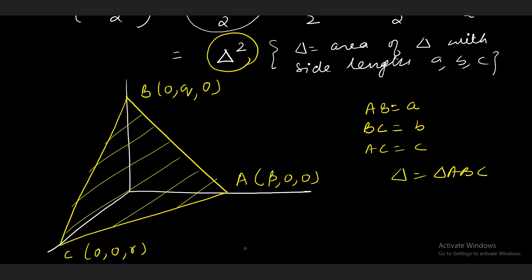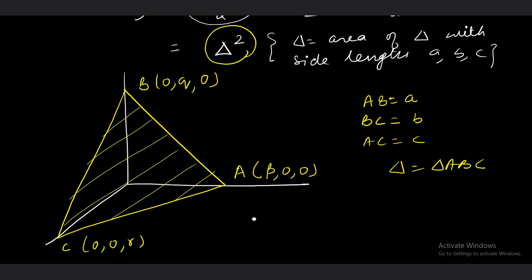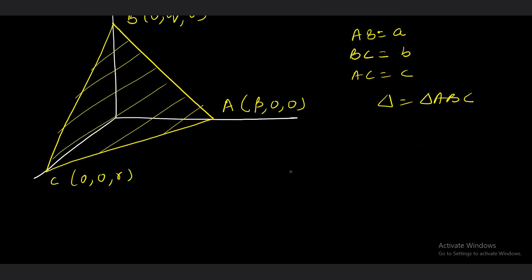After getting the area of this triangle, I am going to put it in Δ² and will complete my question. How to get the area of this triangle ABC? As we revised in the first question, I am going to make use of similar approach. Δ² equals area of triangle OAB whole square plus area of triangle OBC whole square plus area of triangle OCA whole square.